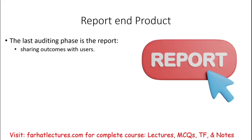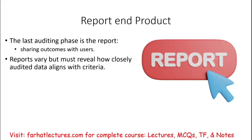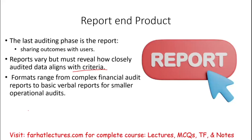We're going to look at many types of reports — maybe 20 to 25 — including attestation, non-attestation, compilation, reviews, and so forth. Just know that at the end we issue a report. Reports vary, but they must reveal how closely the audited information aligns with the criteria. In every report you'll see what was done, what the criteria was, and whether a clean opinion or unclean opinion is given. Format ranges from complex financial audit reports to basic verbal reports for small operational units.